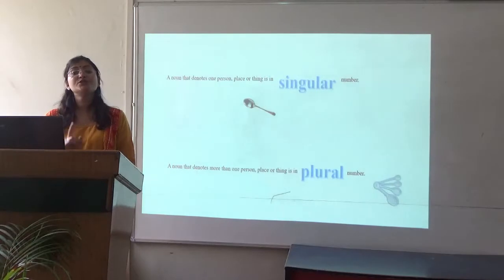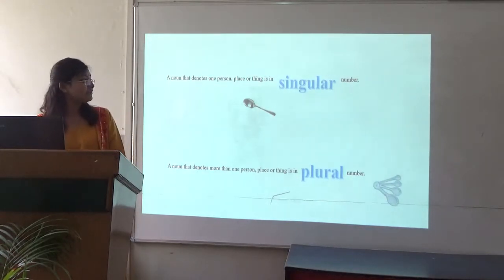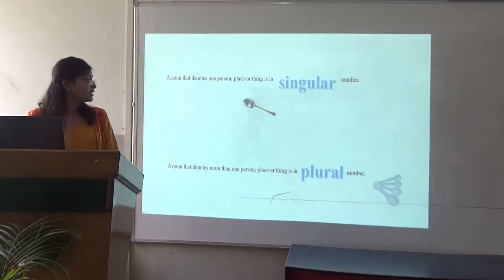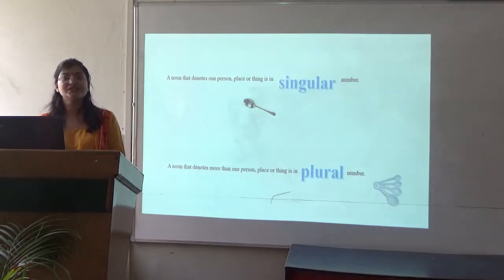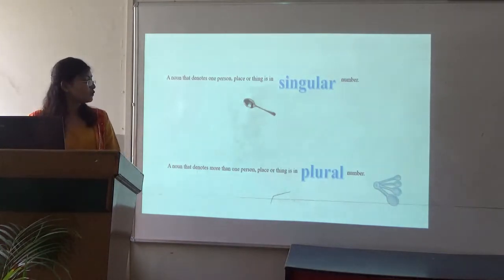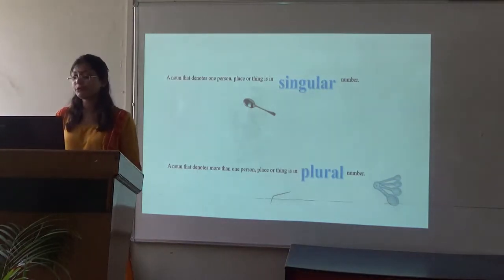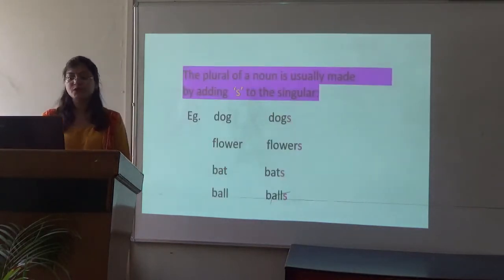A noun that denotes one person, one place or thing is a singular number, or singular noun. Like in the picture we have one spoon, so it's 'a spoon.' In the second picture we have so many spoons, so we call it 'spoons,' which is a plural noun. A noun that denotes more than one person, place or thing is a plural number or plural noun.